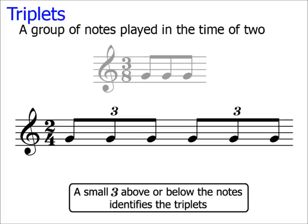Okay, at the start of this video, I said that triplets are a group of notes which are played in the time of two. So, how do you calculate the total value of a group of triplets? Well, when the triplet values are equal, it's fairly straightforward.